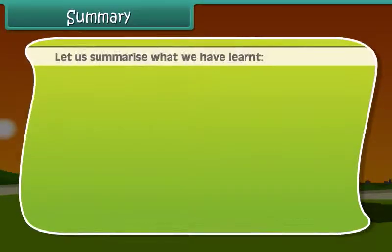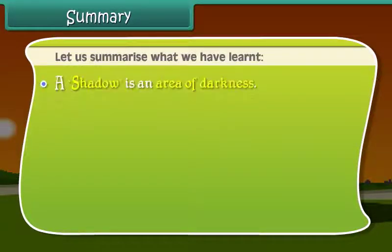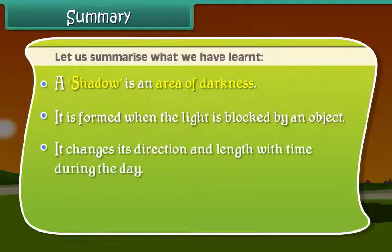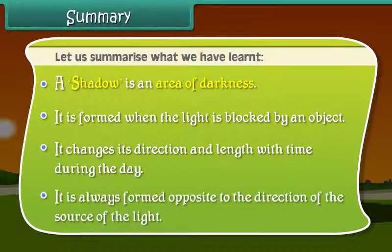Now friends, let's summarize what we have learned. A shadow is an area of darkness. It is formed when the light is blocked by an object. It changes its direction and length with time during the day. It is always formed opposite to the direction of the source of light.